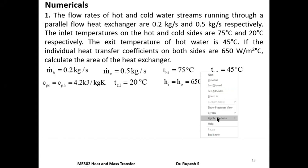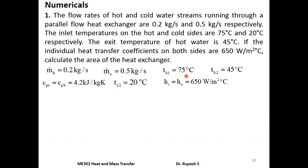This is a parallel flow heat exchanger problem. Given data: mass flow rate of hot fluid = 0.2 kg/s, mass flow rate of cold fluid = 0.5 kg/s, inlet temperature of hot fluid = 75°C, inlet temperature of cold fluid = 20°C, exit temperature of hot fluid Th2 = 45°C. Heat transfer coefficients hi and ho = 650 W/m²°C. Both sides use water, so cp = 4.2 kJ/kg·K from the data book. We need to find the heat exchanger area.